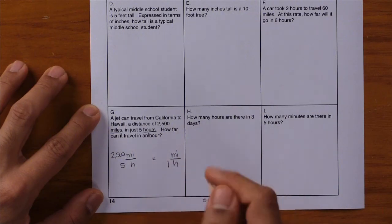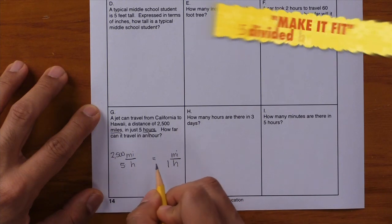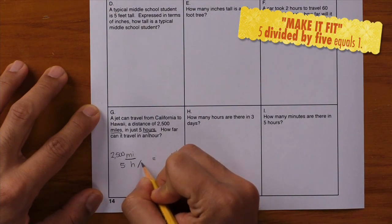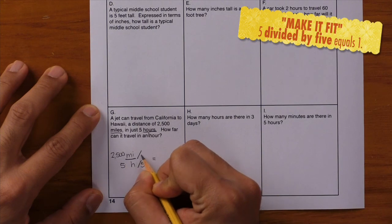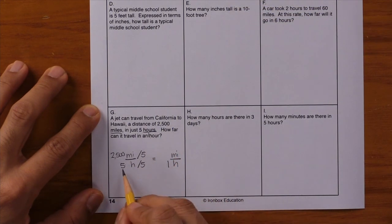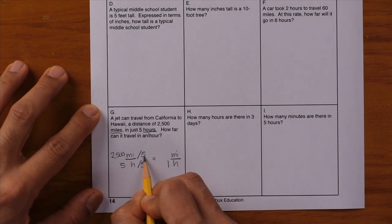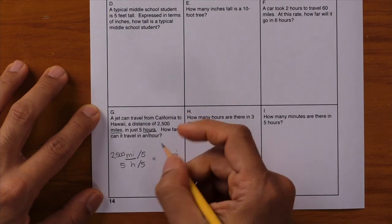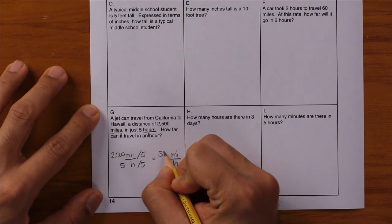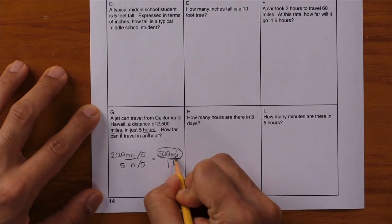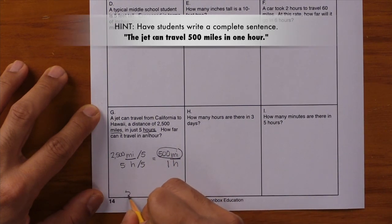And now all we have is an equivalent fraction. How did we get from 5 to 1? We did that by dividing by 5. So write divide by 5, divide by 5. 5 divided by 5 gives you 1. 2,500 divided by 5, and use scratch paper if you need to. The answer here is 500. Circle your answer and we have 500 miles. So write it down.